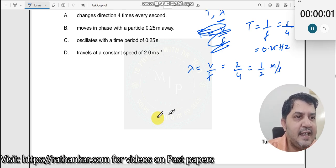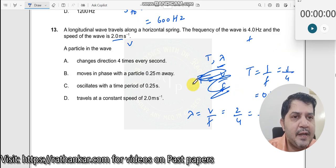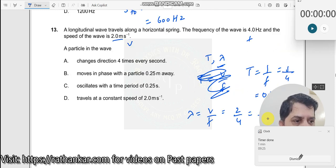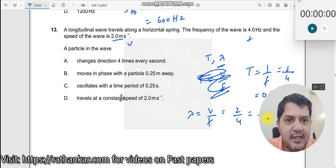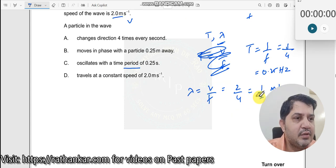Now let us see whether there is any question on wavelength or time period and then proceed further. So now it changes direction four times every second. Now moves in phase, which phase now oscillates with a time period. Time period is already here. So this is 0.25 hertz. This is correct. So C is the right answer.